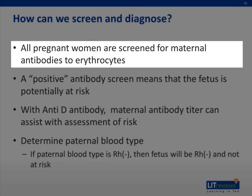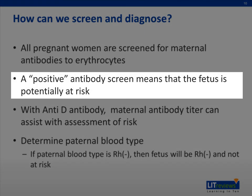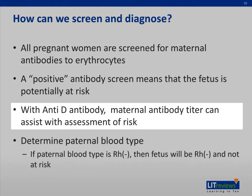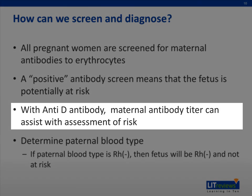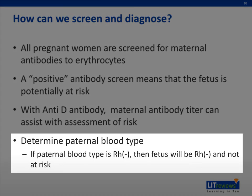All pregnant women undergo screening for isoimmunization at the time of routine prenatal laboratory testing. A positive antibody screen means that the fetus is at risk for hemolytic disease. If the antibody screen is positive, the laboratory performs antibody identification and titer on a maternal specimen. Not all types of maternal antibodies to red blood cell antigens cause hemolytic disease of the fetus and newborn. However, anti-D is a common and potentially severe complication. A reference table can be used to ascertain fetal risk if an irregular antibody is identified. These antibody titers can then be followed during the pregnancy. It is also important to determine the paternal blood type, because if the paternal blood type is Rh negative, then the fetus will be Rh negative and not at risk for hemolytic anemia.